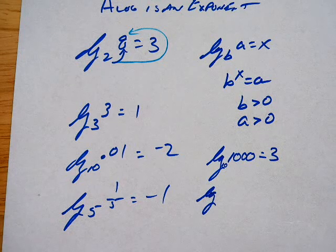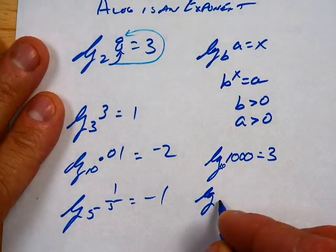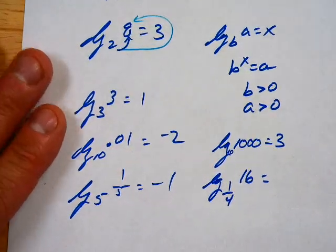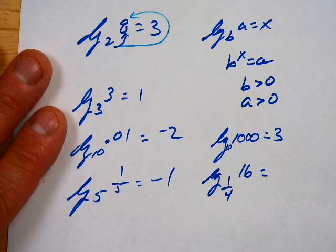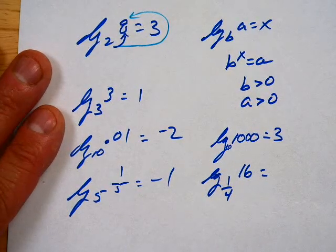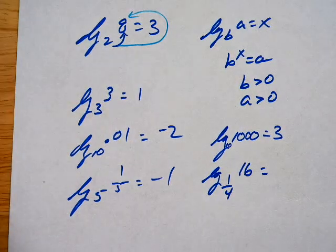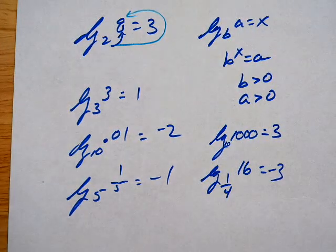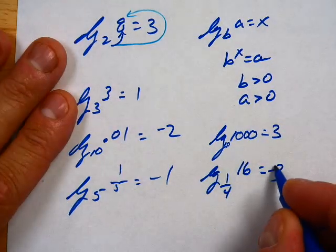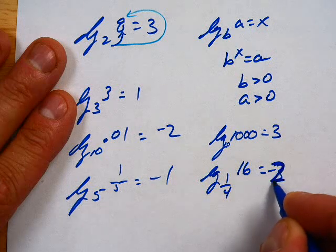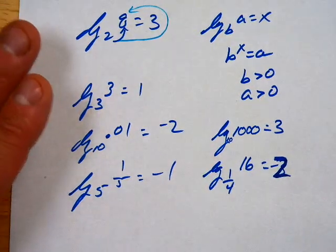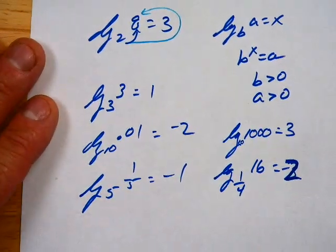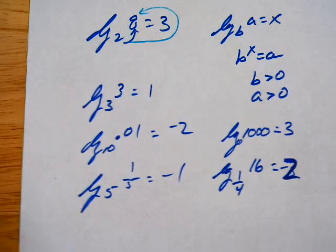Keep going. Log base 1 fourth of 16. Negative 2. Negative 2 is correct. Because we've got to flip it and then we've got to square. I've got that 3 in my head. I can't get rid of it. So bottom line, you're looking for what exponent would take to get that done.